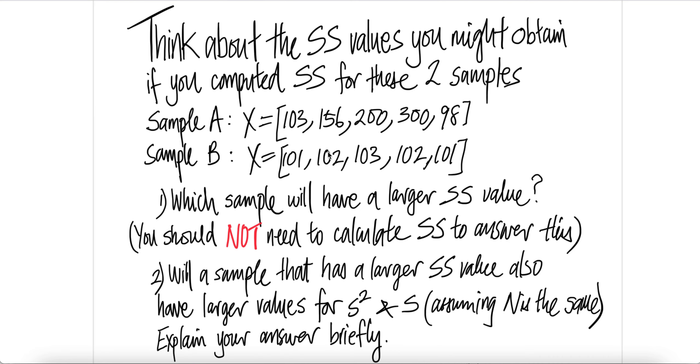Notice that sample B bounces - the minimum is 101 and the maximum is 103. It bounces from 101, 102, 103. Whereas for sample A, the smallest one is 98 and the highest one is 300. It bounces quite far.